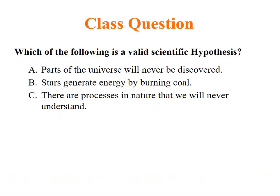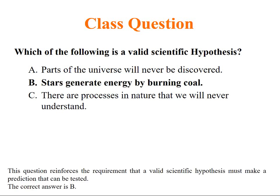Which of the following is a valid scientific hypothesis? A: part of the universe will never be discovered. B: stars generate energy by burning coal. C: there are processes in nature that we will never understand. Choice A and C cannot be a hypothesis because they can never be tested. The only hypothesis which can be tested is stars generate energy by burning coal. We know it is not by burning coal but rather by nuclear fusion. But this hypothesis could be tested, so this choice is the right answer.